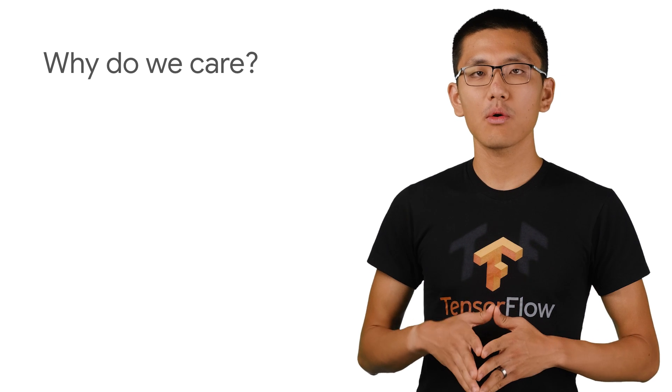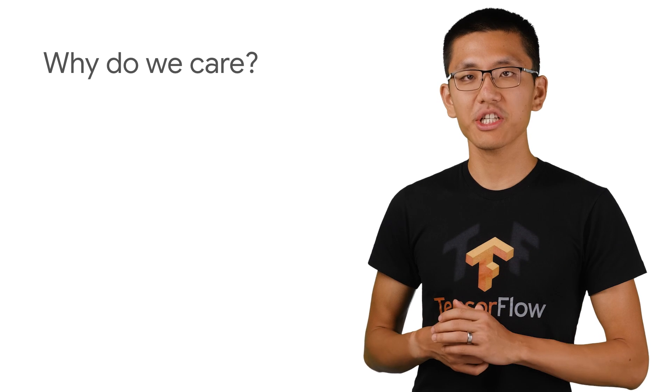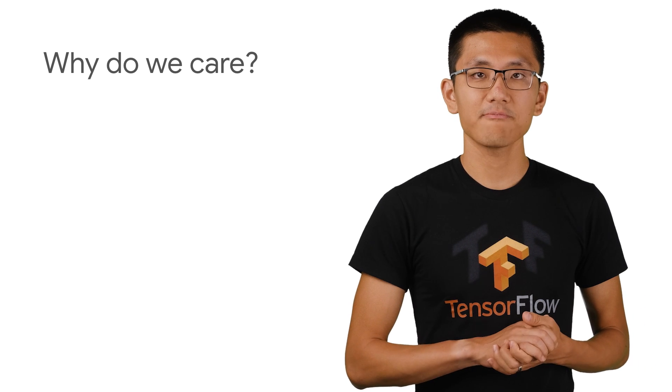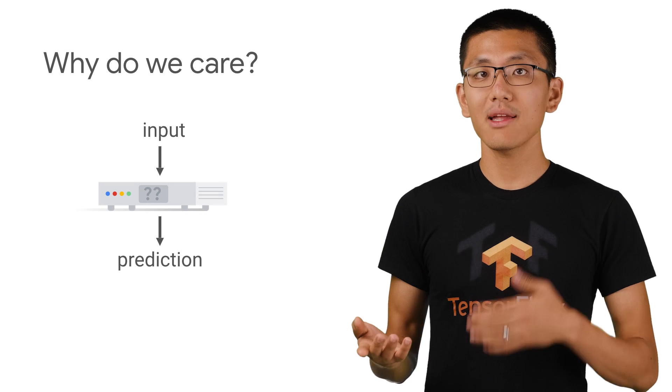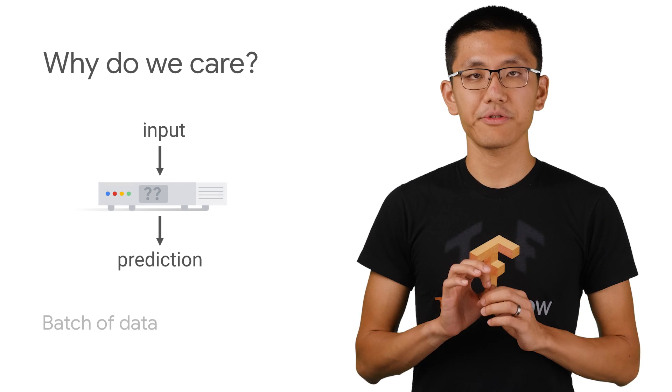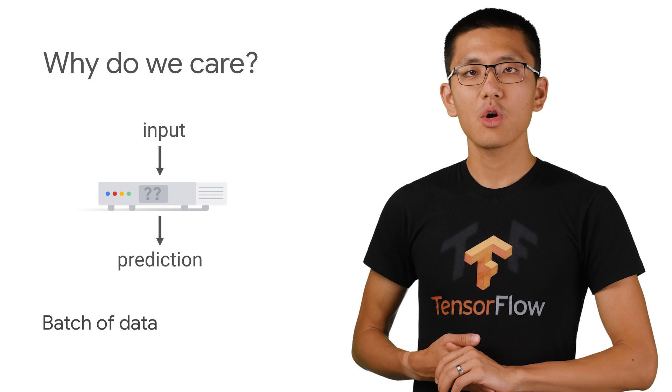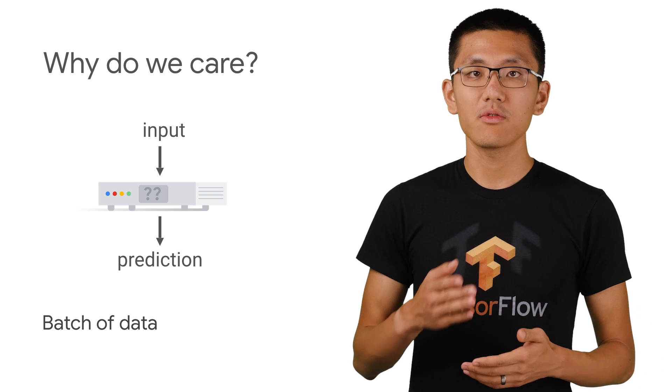Before we dive in, I want to get us on the same page about why we care about how a neural network arrives at the prediction that it does. Isn't it enough that the final prediction is right? Well, not quite. In real-world production use cases of machine learning image recognition systems, a lot of additional value can be gained by understanding the how and the why of a given prediction. This helps the end user of the predictions better understand whether it's being made for the right reasons.